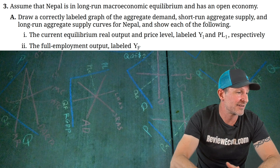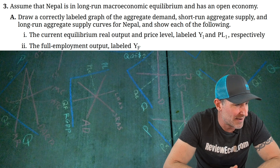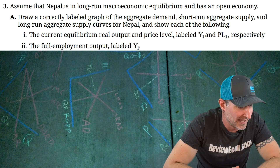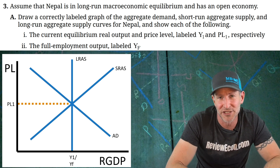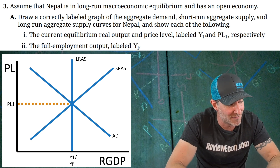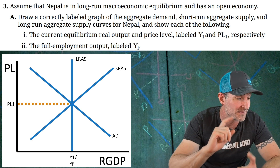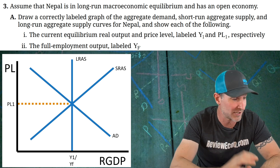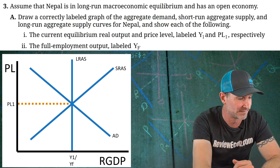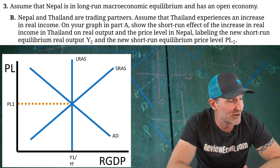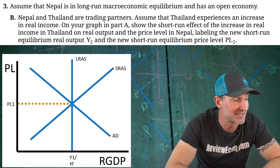Over on question number three, we draw an AS/AD model where the economy is currently in long-run equilibrium, with all appropriate labels. The Y-axis is the price level, the X-axis is real GDP. We have a downward-sloping aggregate demand curve, an upward-sloping short-run aggregate supply curve, and a vertical long-run aggregate supply with YF below it. The current equilibrium matches the long-run equilibrium, labeled PL and Y1. Now we're told that Nepal and Thailand are trading partners, and Thailand experiences an increase in real income.